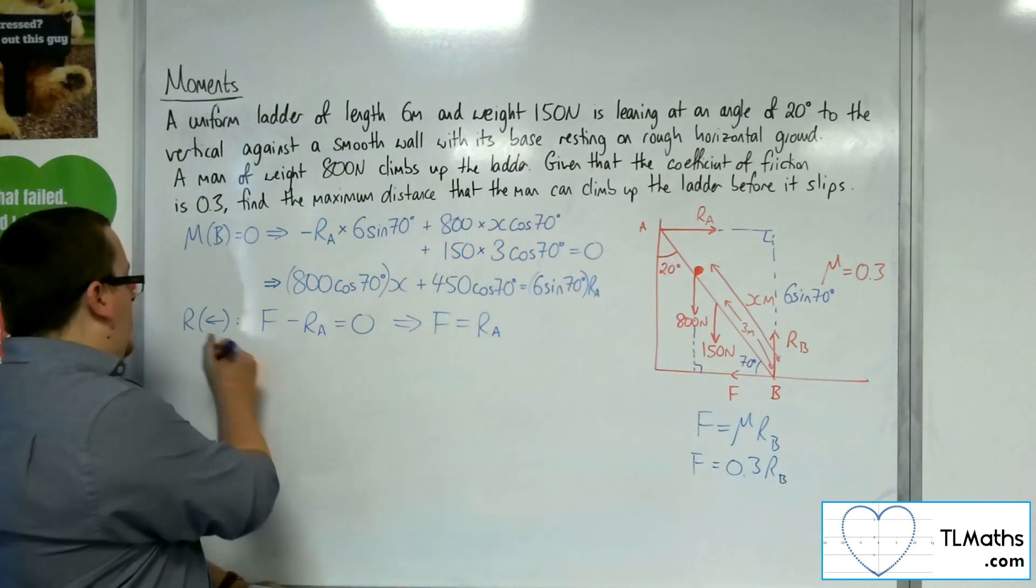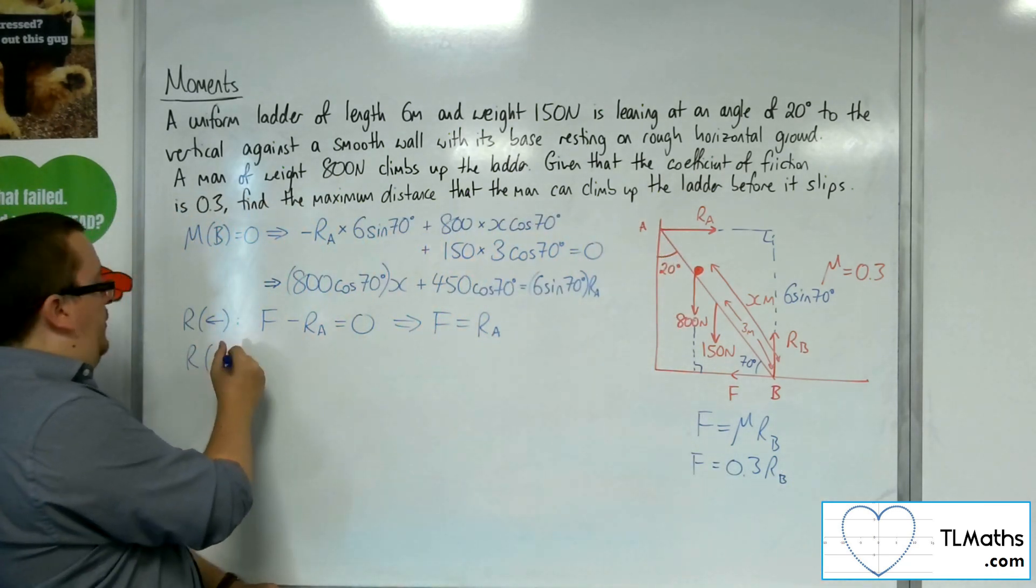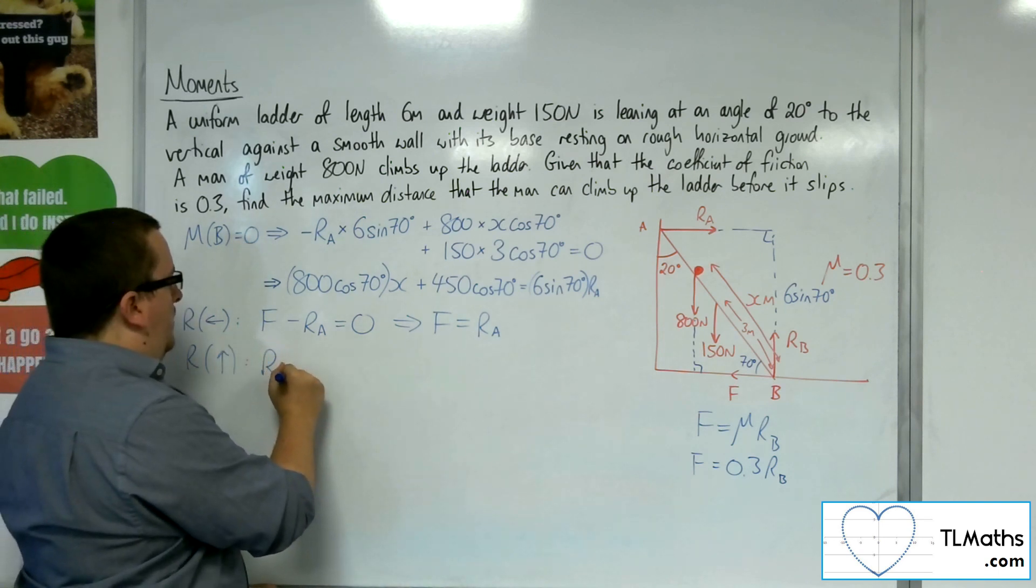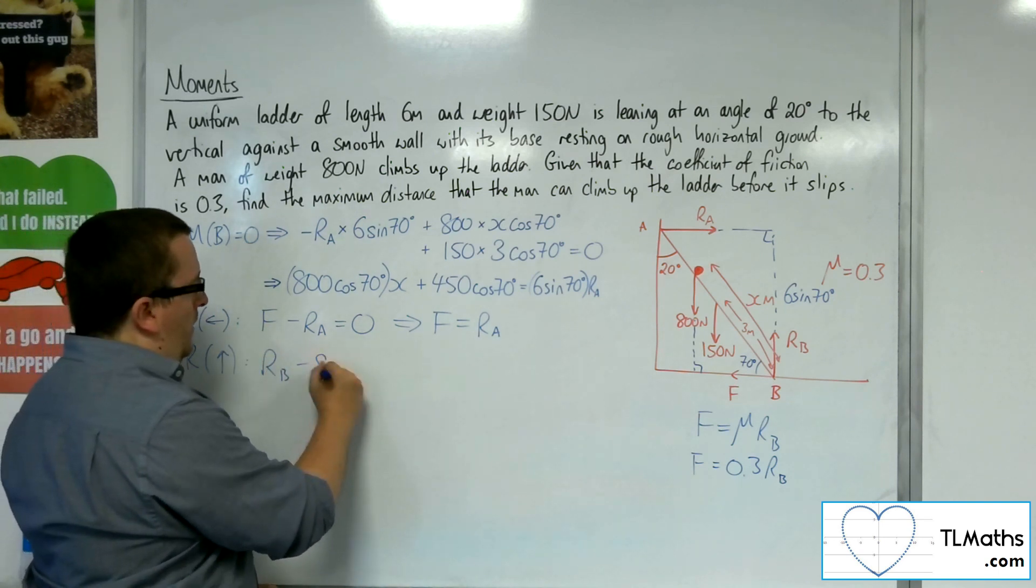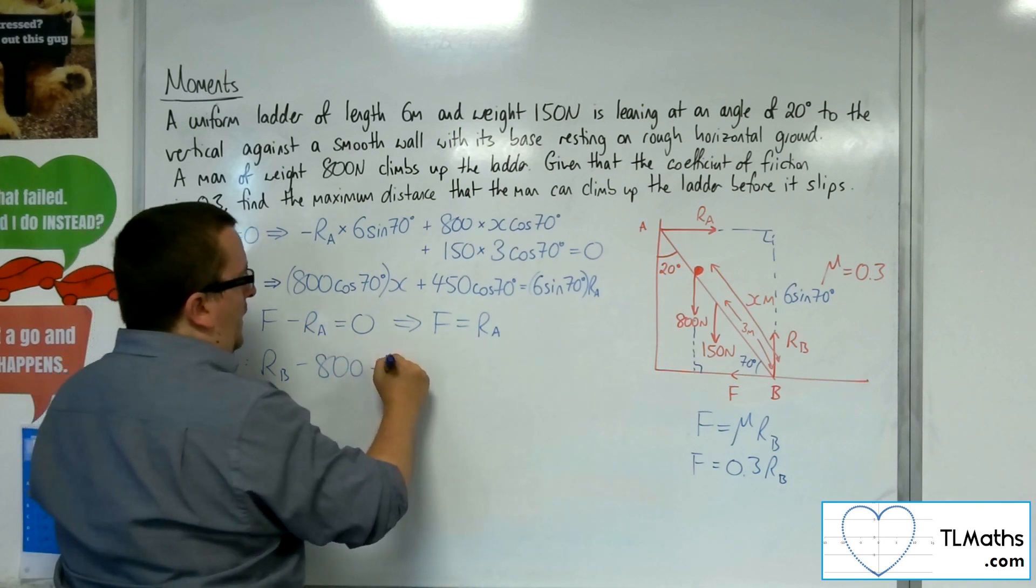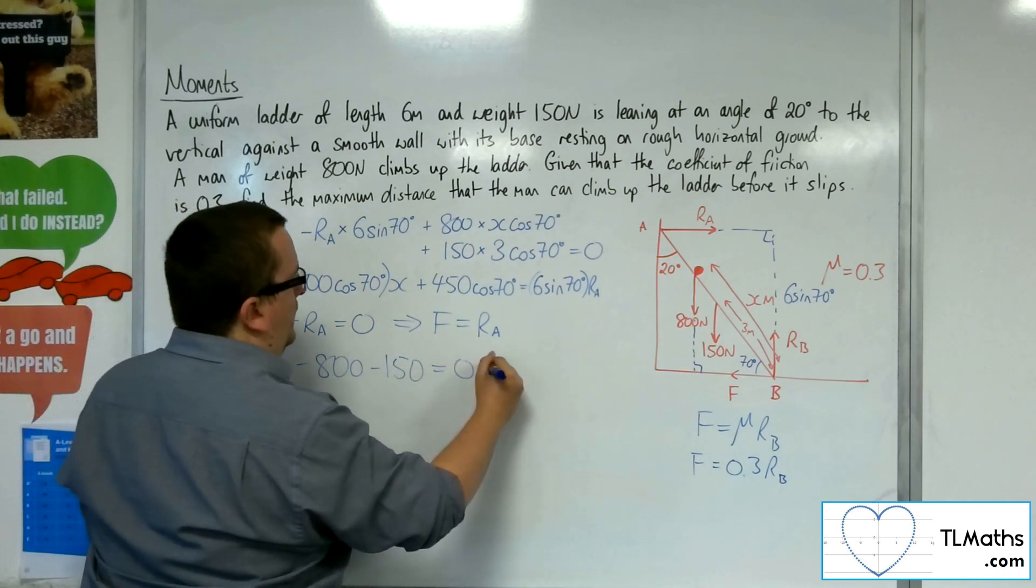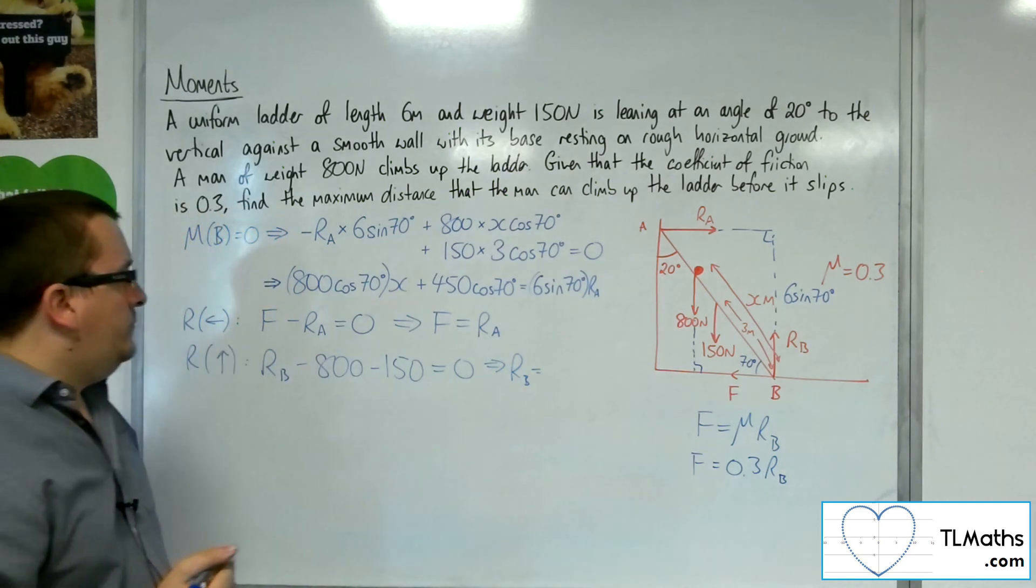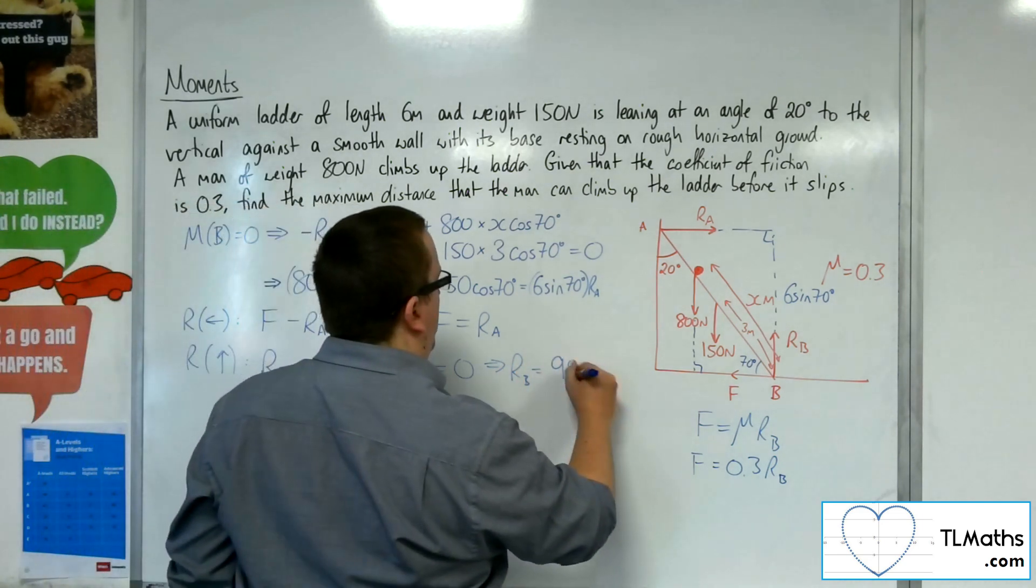Well, if I look at resolving the forces vertically, taking upwards as positive, then I've got that RB. So RB, we've got the 800 working downwards and the 150 working downwards, and that's got to be equal to 0. So RB is going to be 950 newtons.